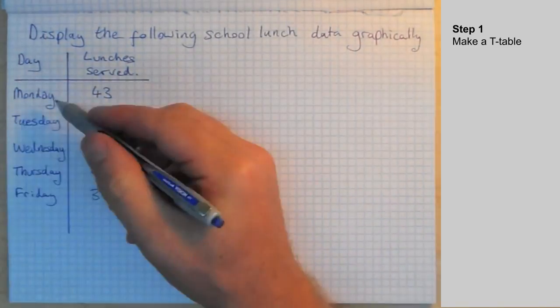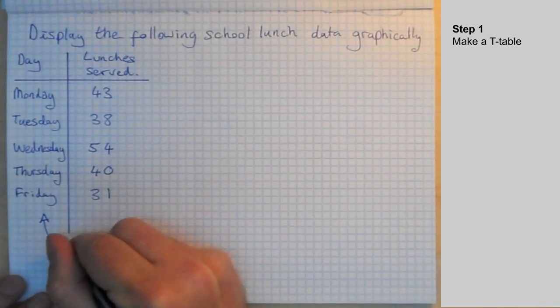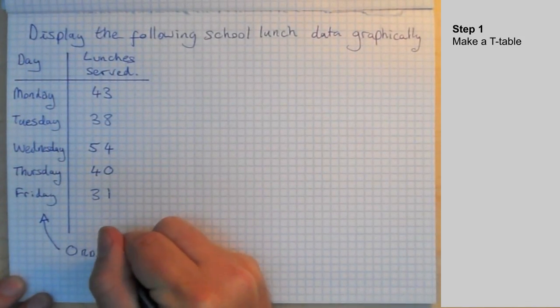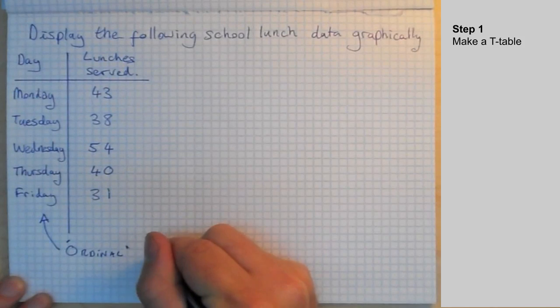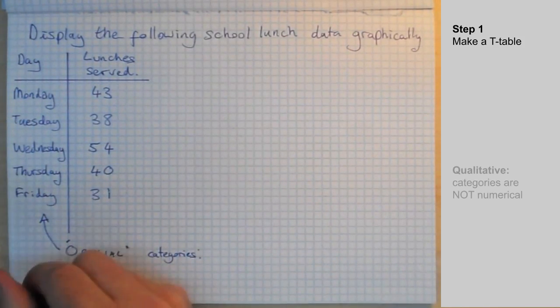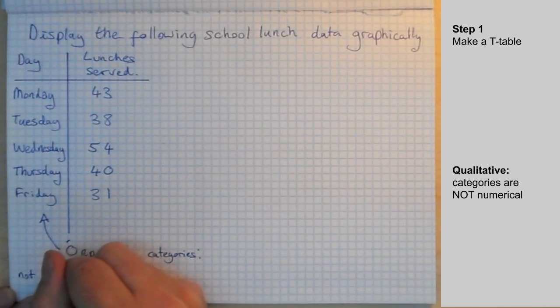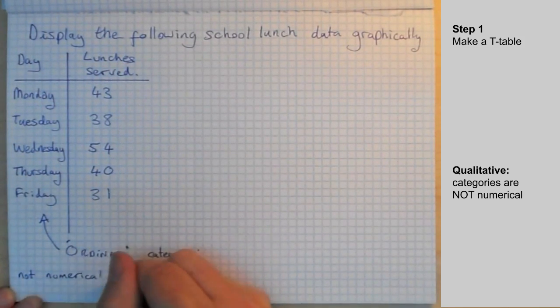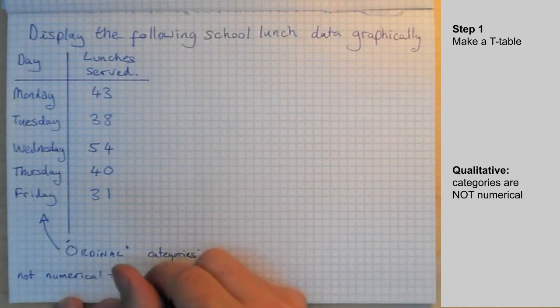So we're going to make a T-chart, but we should note that these are ordinal categories. This is a difficult point that some people fail to pick up on. The days of the week are not numerical, so that's a qualitative kind of data that we're collecting here because the categories are not numerical.